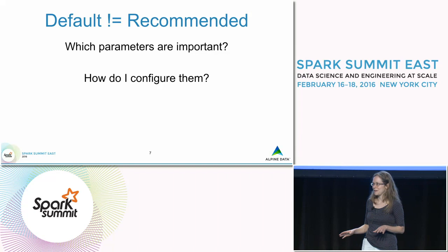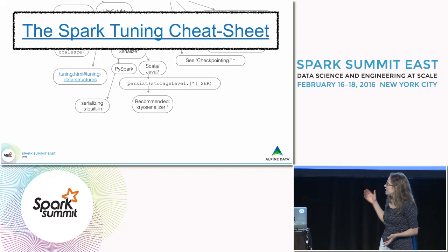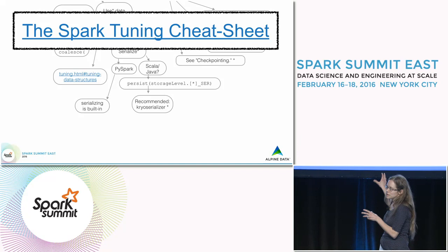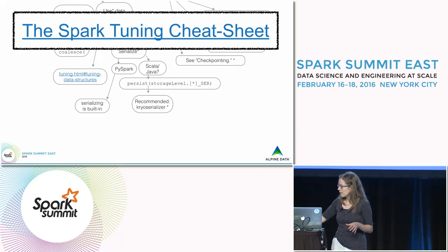Spark is infinitely configurable and there are so many parameters — which ones are important and how do I configure them? That's how we came up with the Spark tuning cheat sheet. It's basically a rubric — a series of questions where if yes, follow this path; if no, follow that path. I'm not going to talk about the whole cheat sheet today, just a few subsets.